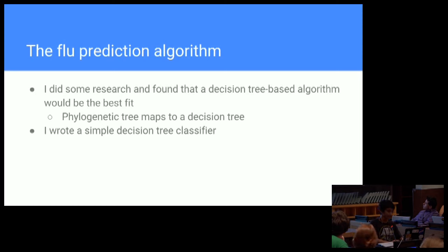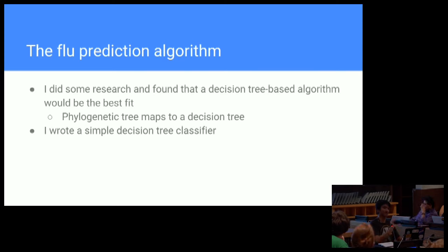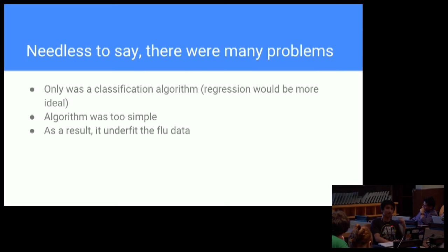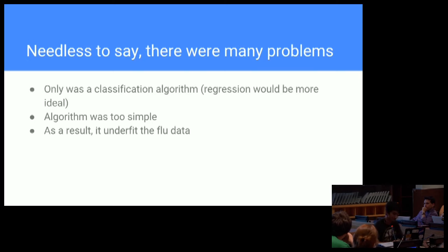After I got past that hurdle, it was time to create the algorithm myself. I did some research and found a decision tree algorithm would be the best fit, because it was easy for me to write and debug. Also, it matches a phylogenetic tree, as every time a decision tree branches, it's similar to how a phylogenetic tree branches from its parent to the children. But there were lots of problems — I wrote a classification algorithm, although what I really wanted was a regression algorithm, and the algorithm was too simple and underfit the data. My initial hypothesis was confirmed: I could not write an algorithm that matched the level of complexity that the flu data had.